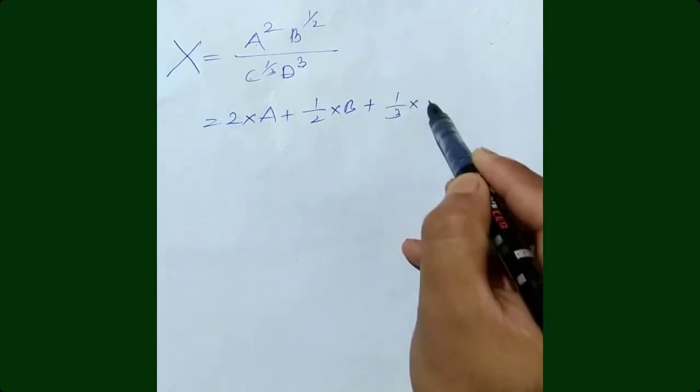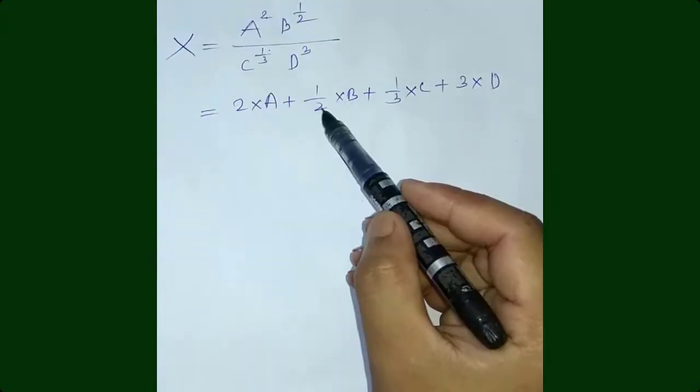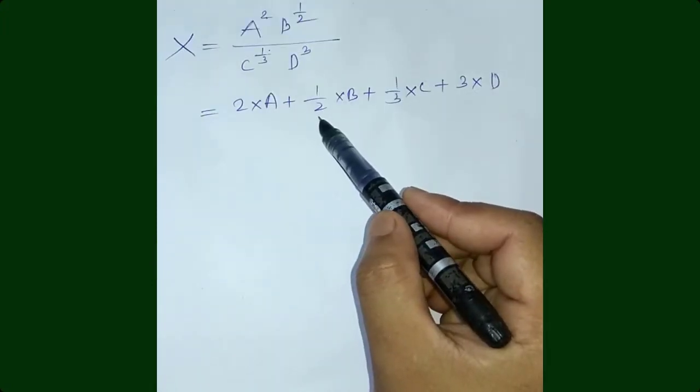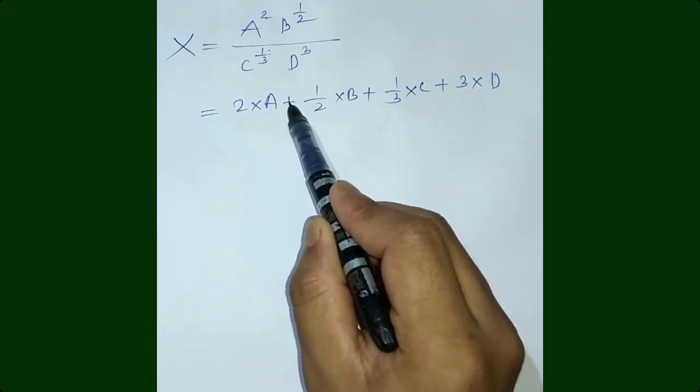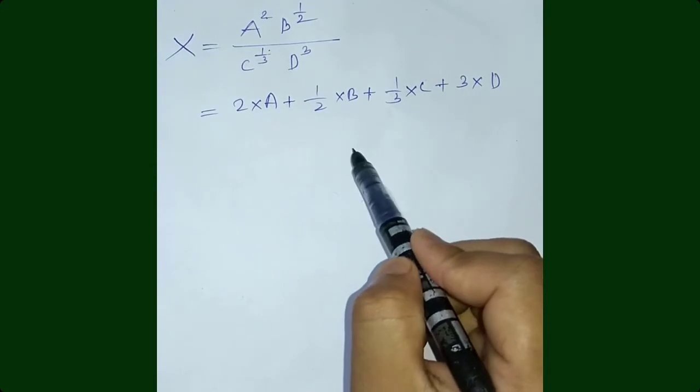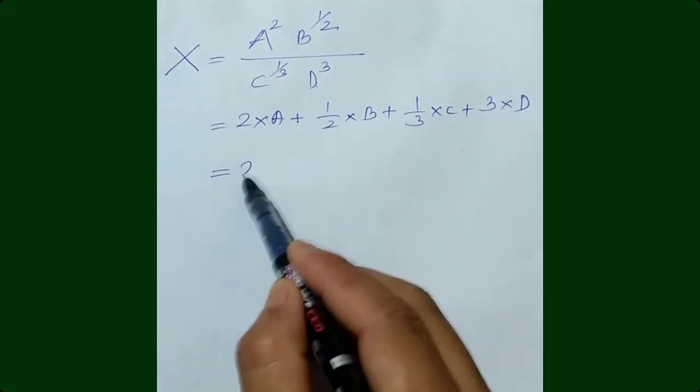When two physical quantities are multiplied or divided, their errors are added up. That's why you can see this plus sign in this expression, right? Now the things are very easy to do.